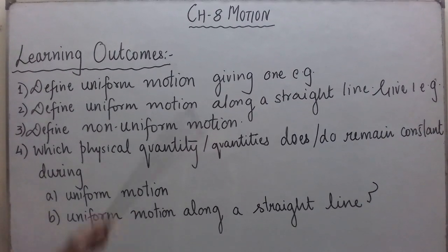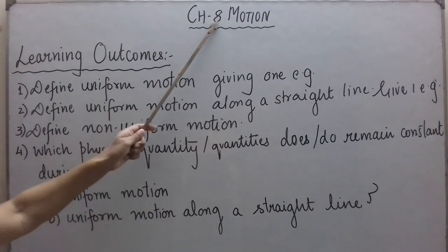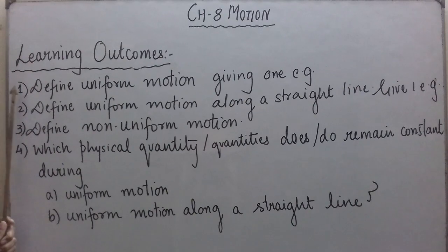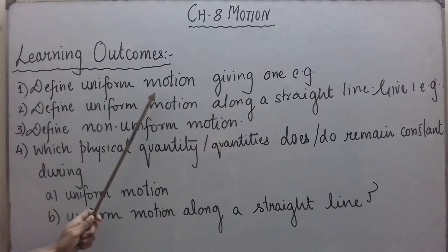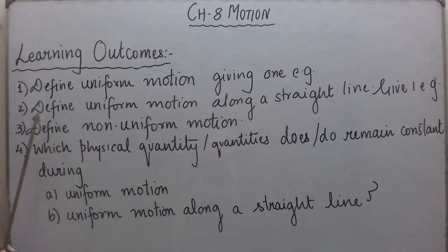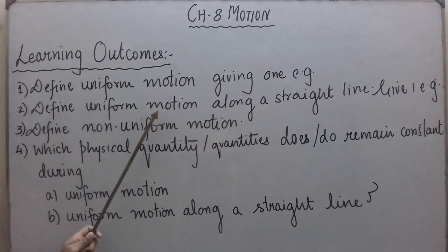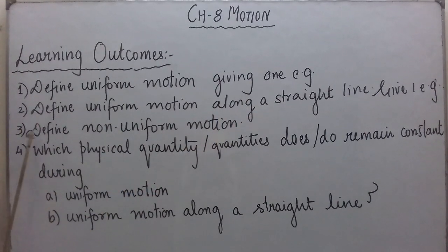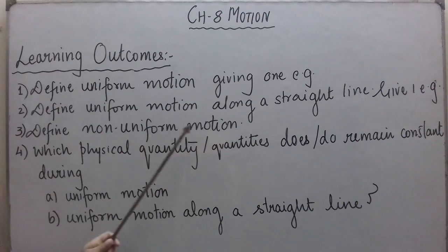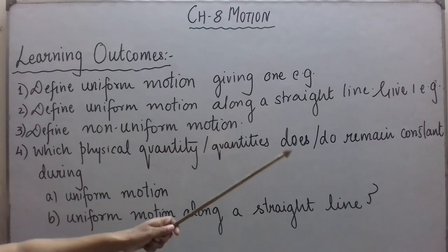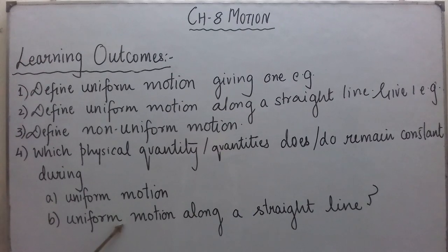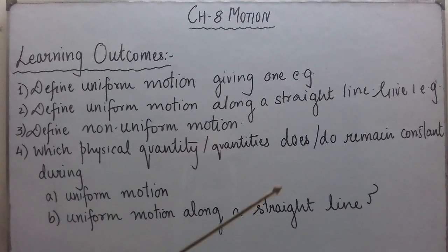Hello students, in this video we are going to continue with Chapter 8 - Motion. The learning outcomes of this video are: first, define uniform motion giving at least one example; second, define uniform motion along a straight line with at least one example; third, define non-uniform motion; and fourth, which physical quantity or quantities remain constant during uniform motion and during uniform motion along a straight line.